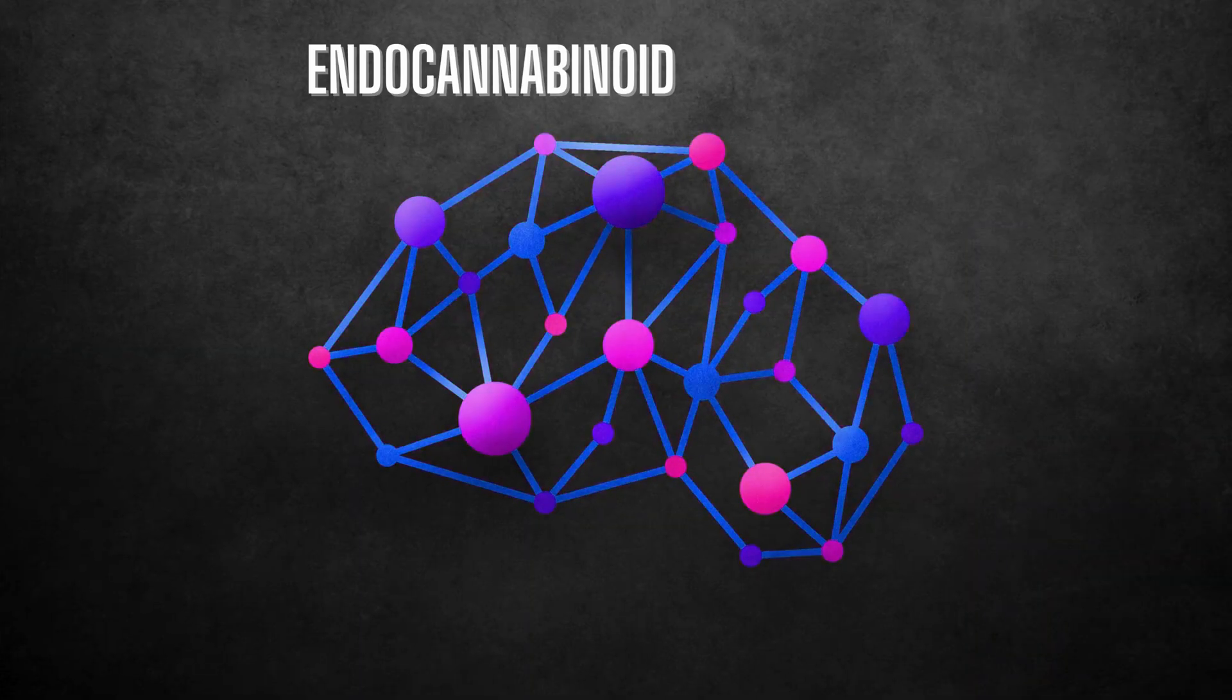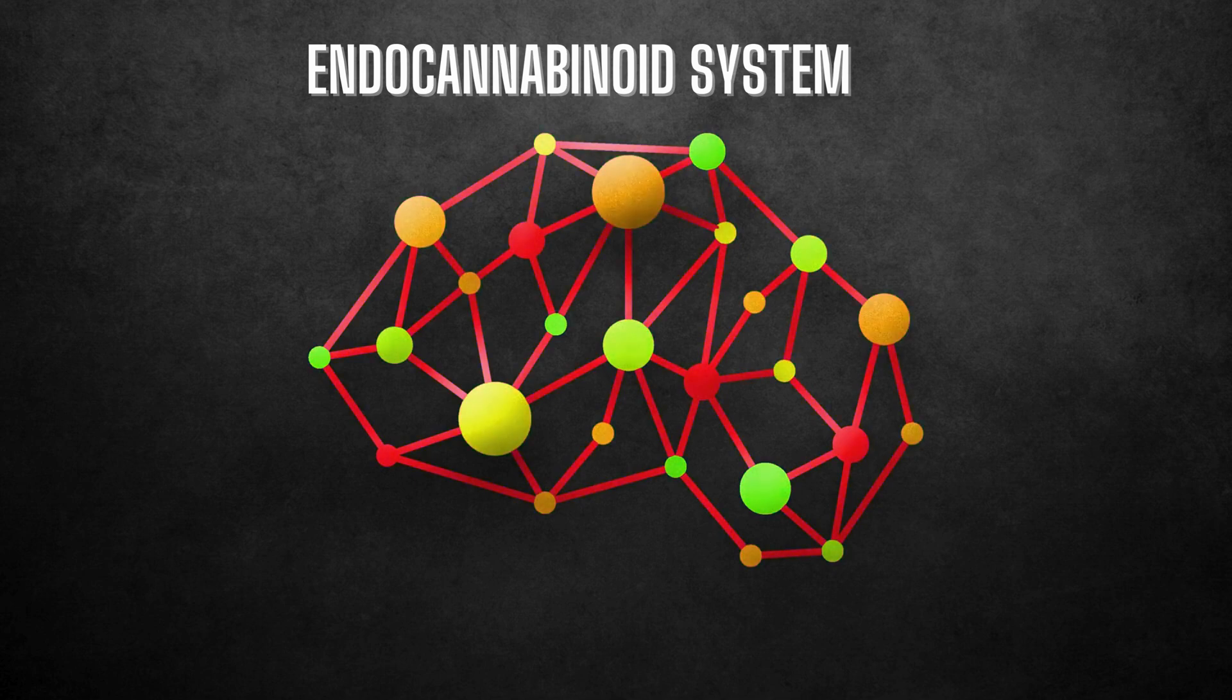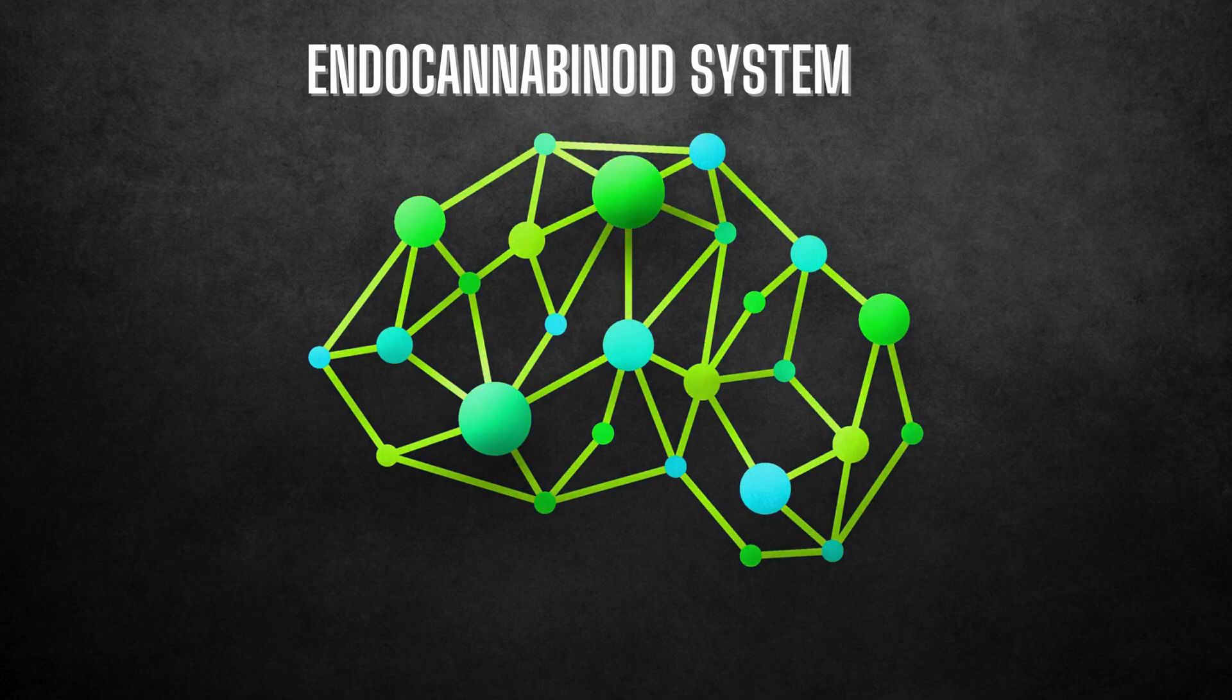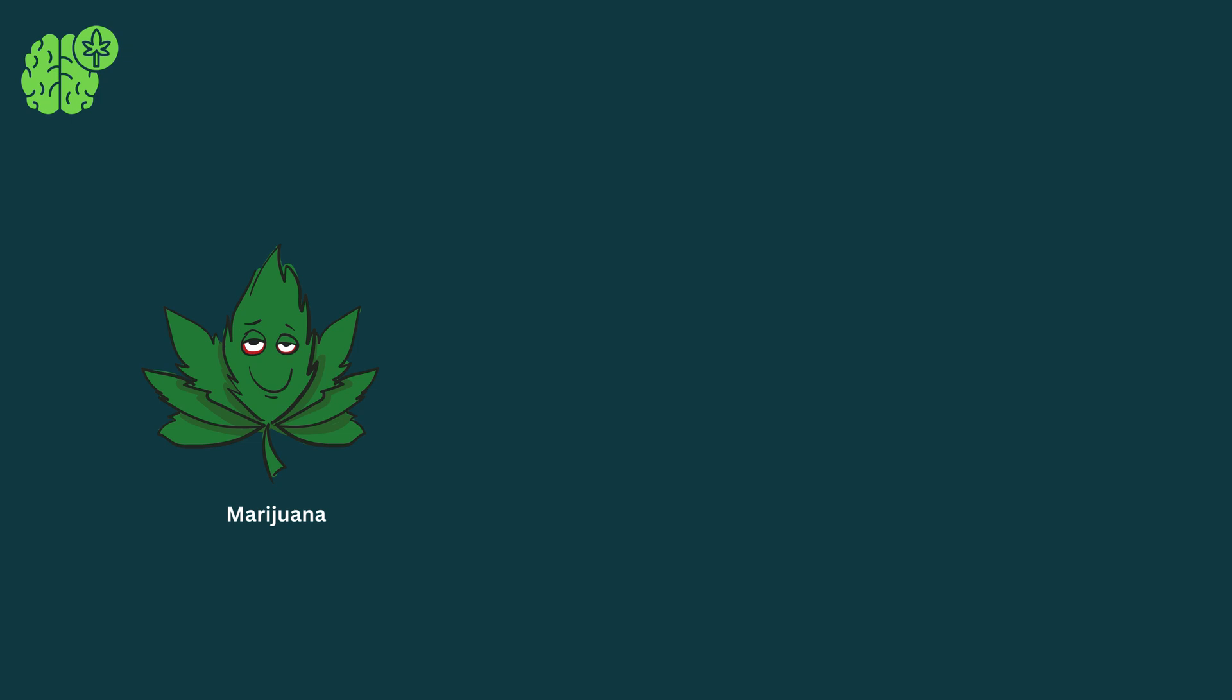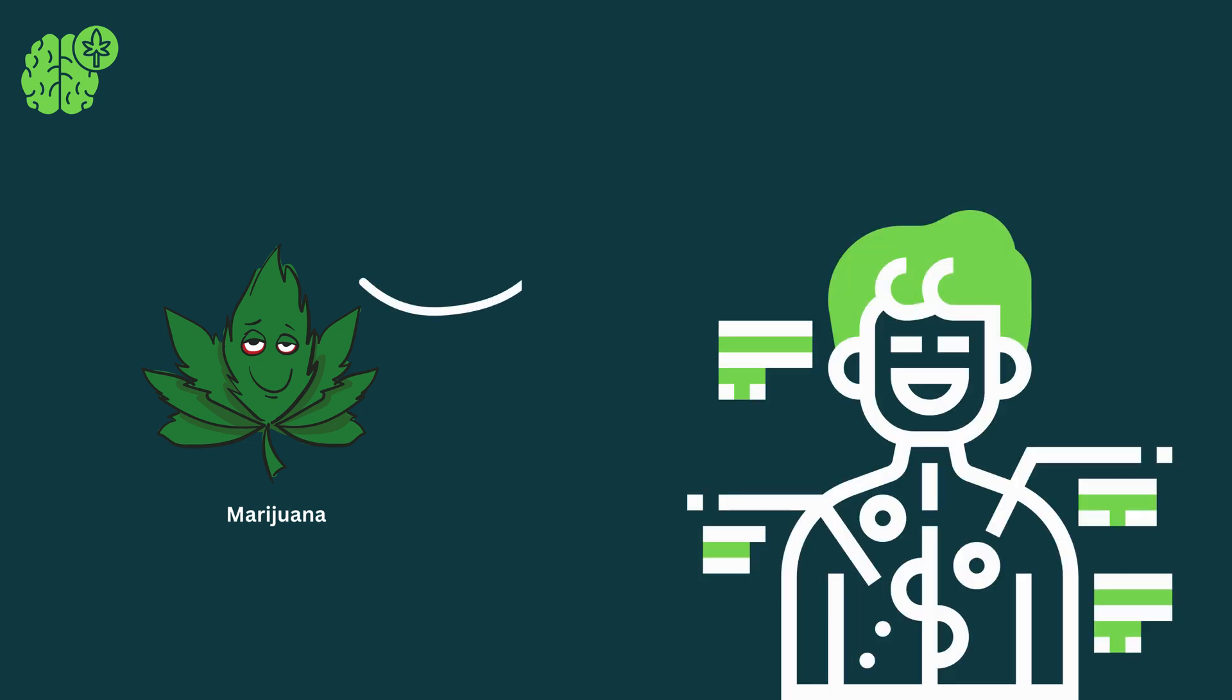Additionally, there's the endocannabinoid system, which influences sleep, mood, and appetite. Cannabinoids, like those found in marijuana, interact with this system. When activated, they can make you feel relaxed and drowsy.